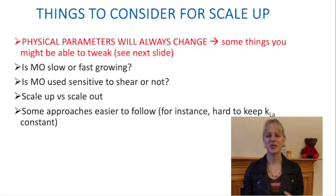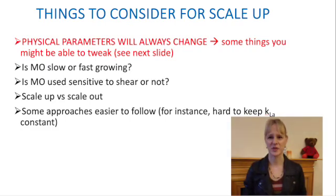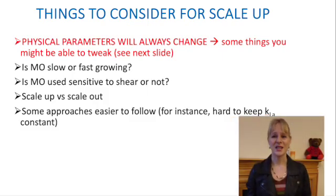Unfortunately when you scale up the physical parameters always change. So there's always things that you have to adjust, such as for instance adjusting the stirrer speed to make sure that there's enough oxygen available to your microorganisms. But key criteria to consider are for instance whether your microorganisms are fast or slow growing, or whether they are shear sensitive. Some of the approaches are relatively easy to follow, but some of these parameters such as KLA are difficult to calculate.